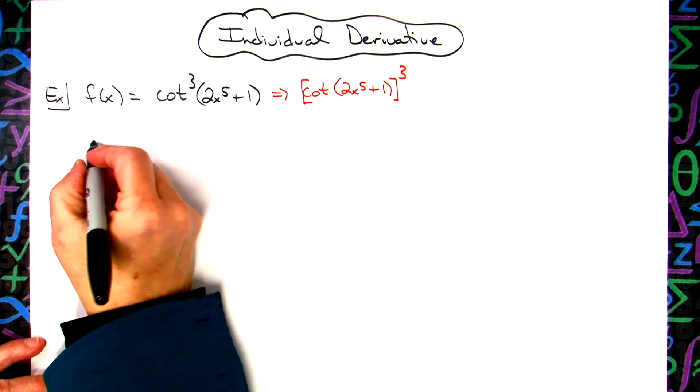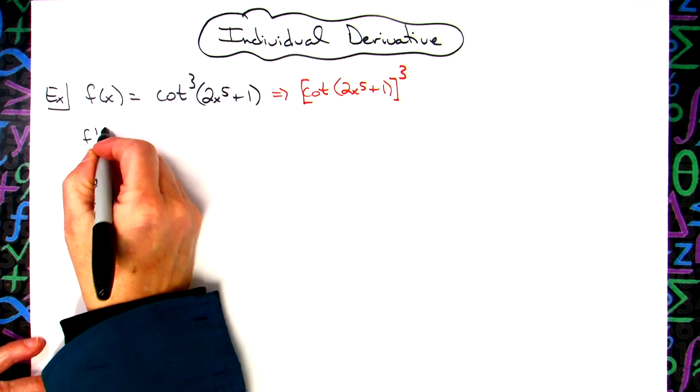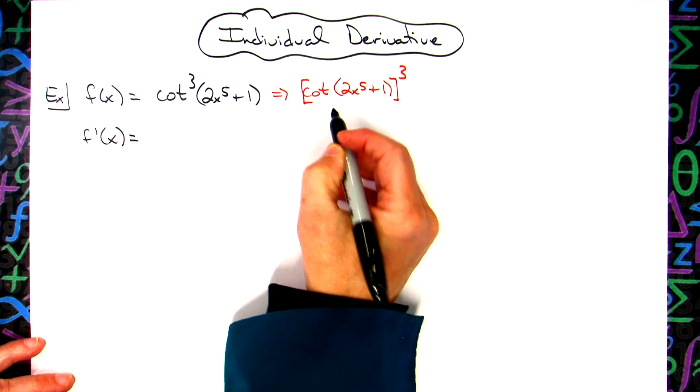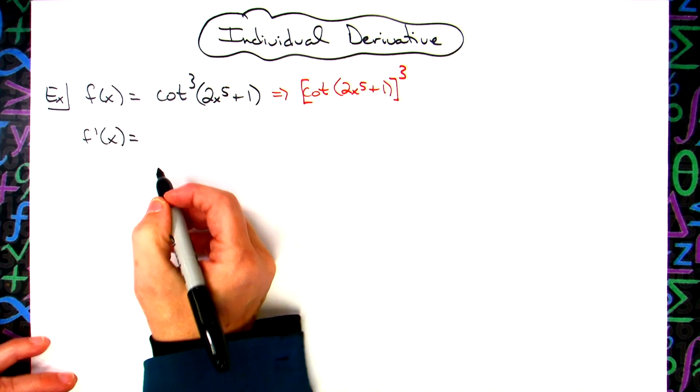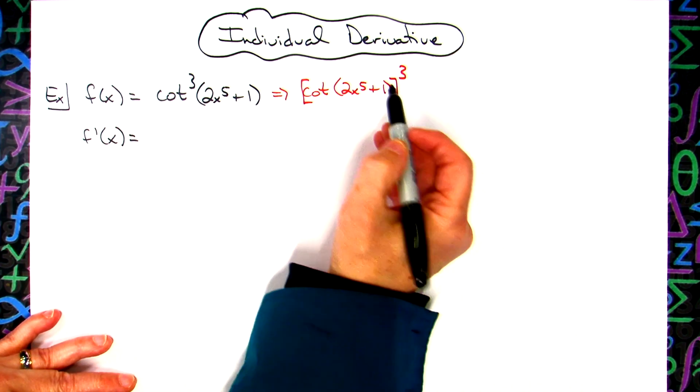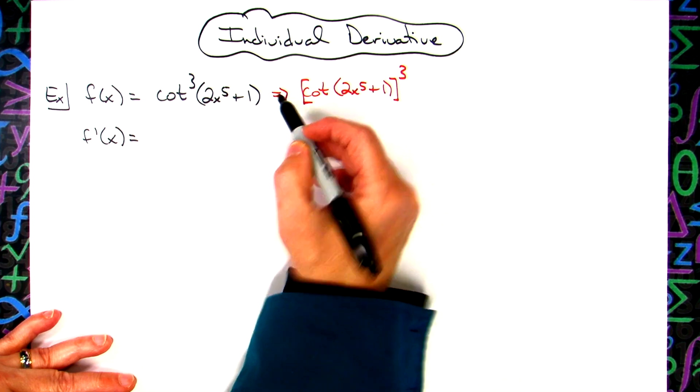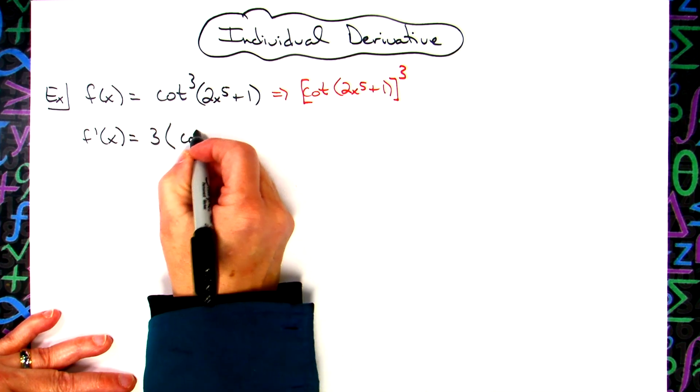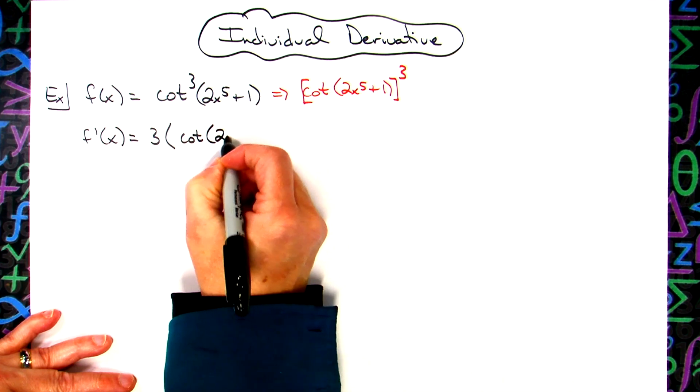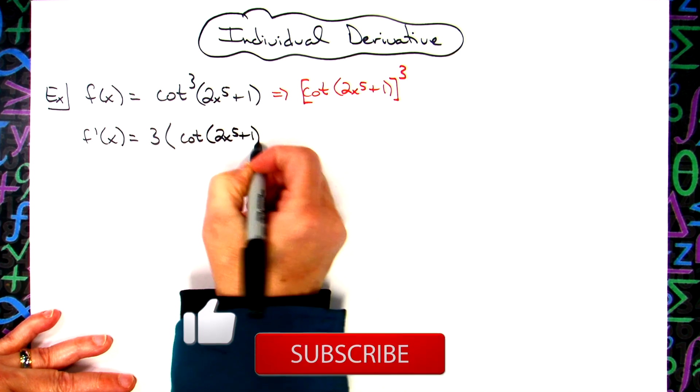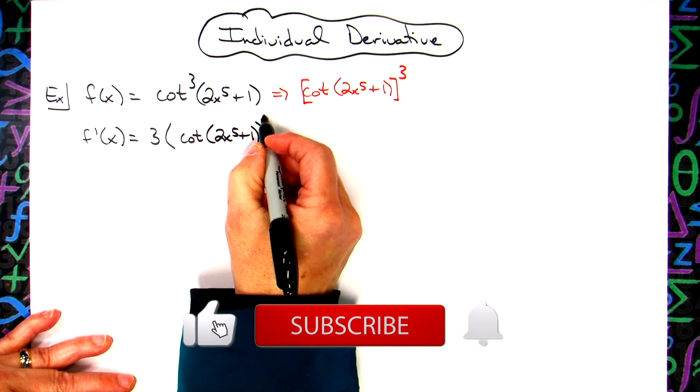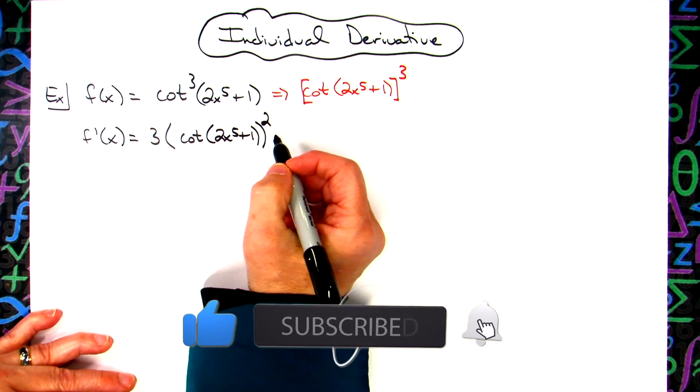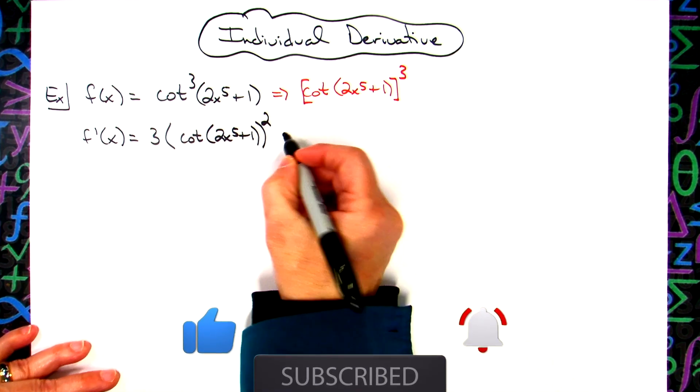So we're going to then go ahead and apply a chain rule here, since we have an inside function and an outside function, to be able to find this derivative. So my outside function is the power, so we're going to go ahead and do power rule. We'll pull that three down in front. We'll leave the inside alone, so cotangent 2x to the fifth plus one. All of that gets left alone. We're going to decrease one from the exponent there, so to the second power, and then put in the chain.